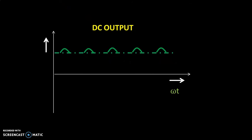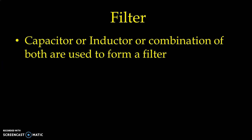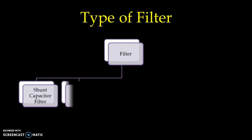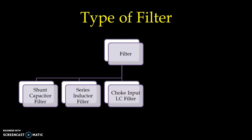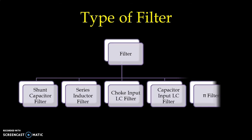After application of a filter circuit, an almost smooth DC output waveform is possible, or very close to smooth DC. We can have different waveforms after application of a filter circuit. Now let us see how the formation of a filter circuit is possible. We use a capacitor, an inductor, or a combination of capacitor and inductor to form a filter circuit. The different types of filter circuit are: shunt capacitor filter, series inductor filter, choke input LC filter, capacitor input LC filter, and pi filter.